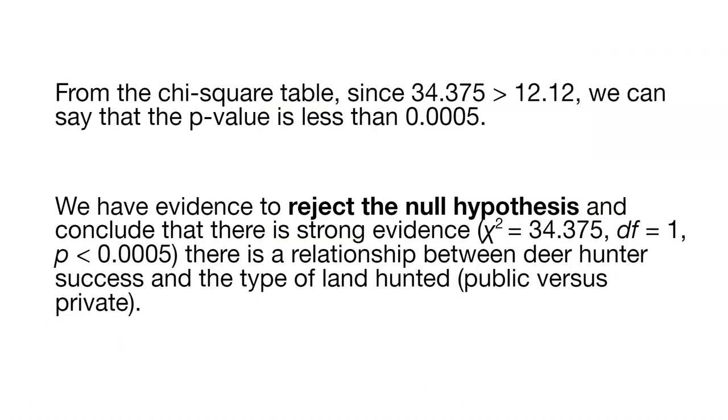From the chi-square table, we found that critical value of 12.12. Since our chi-square statistic of 34.375 is greater than 12.12, we can say that the p-value is less than 0.0005. That's looking just where that value falls on the chi-square table.